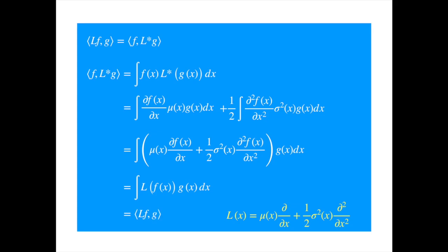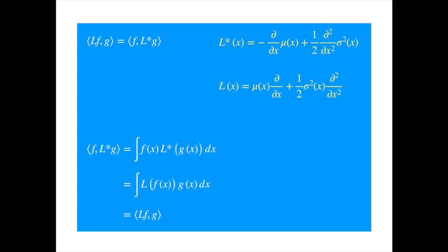Now we recognize the term in brackets as the operator of the backward equation, so we can replace it by L. And we can write this in terms of inner product. So we can see that the backward operator is the adjoint of the forward operator, which we reproduce here. So this is what they mean when they say the forward and backward equations form an adjoint system.